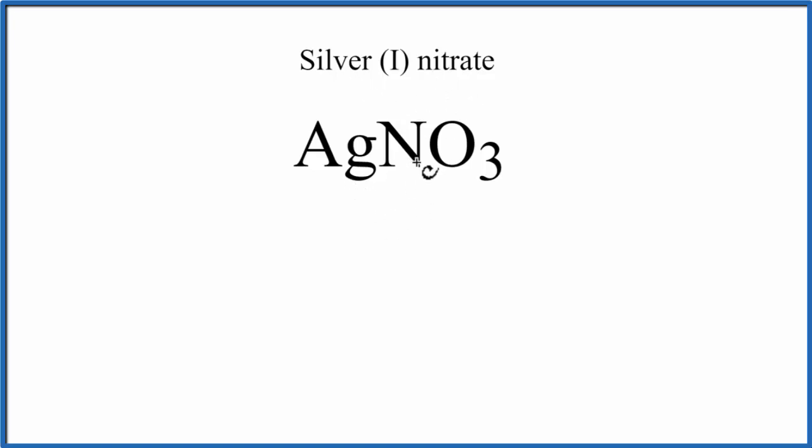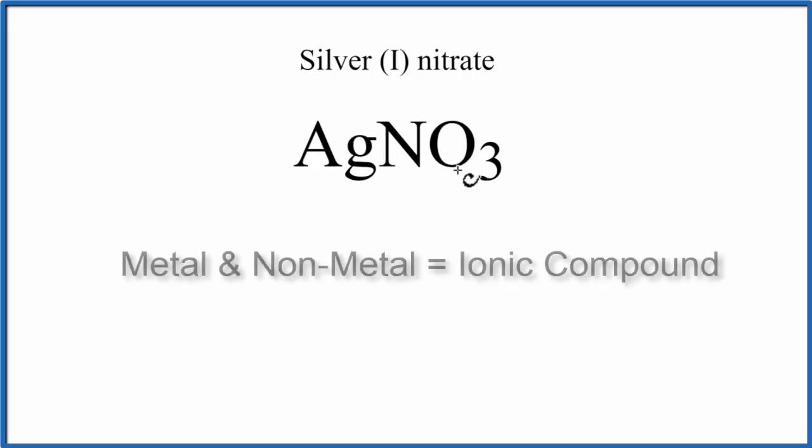Silver is a metal, and then nitrogen and oxygen, those are non-metals. In fact, they're bound tightly together in a polyatomic ion. So we have a metal and some non-metals, that makes it ionic.